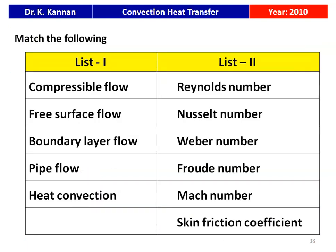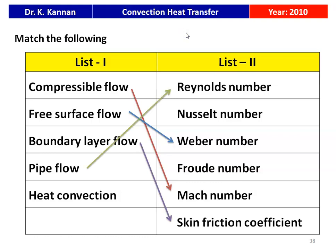Match List 1 and List 2. List 1: compressible flow, free surface flow, boundary layer flow, pipe flow, heat convection. List 2: Reynolds number, Nusselt number, Weber number, Froude number, Mach number, skin friction coefficient. Correct matches: compressible flow → Mach number; free surface flow → Weber number; boundary layer flow → skin friction coefficient; pipe flow → Reynolds number; heat convection → Nusselt number.